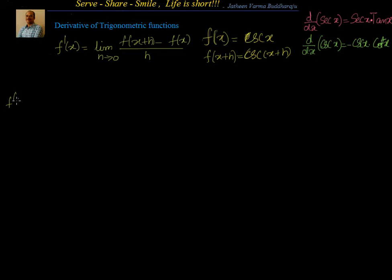We will say f dash x is equal to limit h tends to 0, f of x plus h, that is cosecant of x plus h minus cosecant x, divided by h.